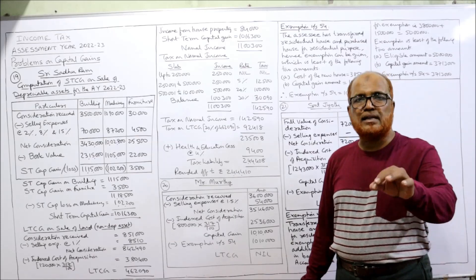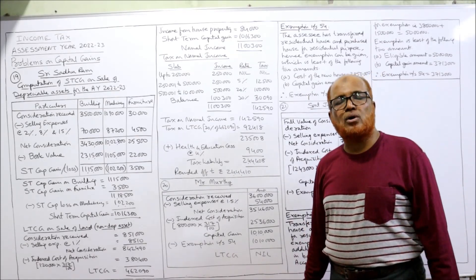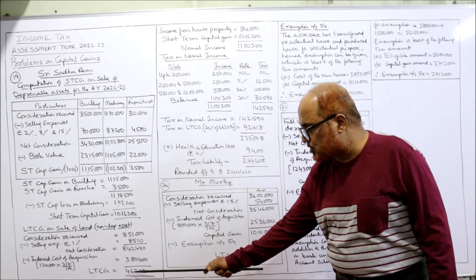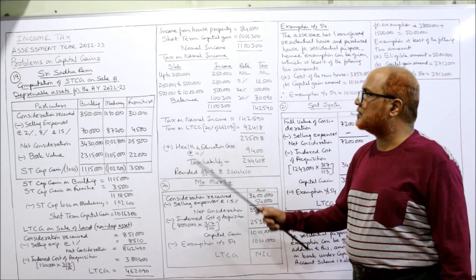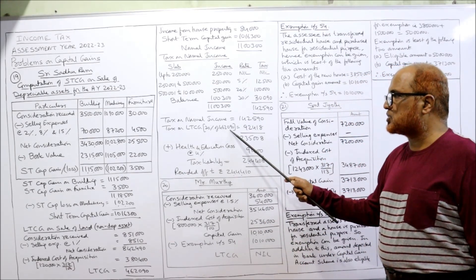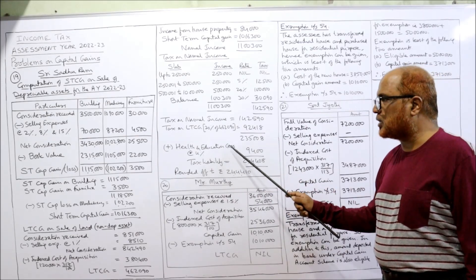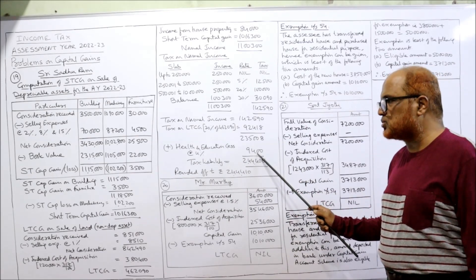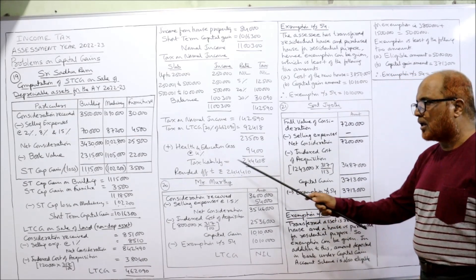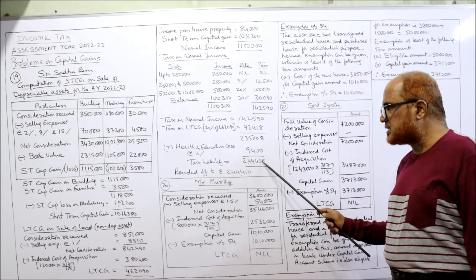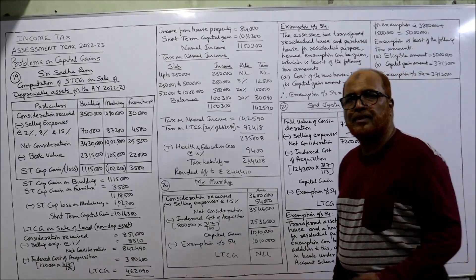Add tax on LTCG: ₹4,62,090 at flat 20% rate. Then add health and education cess at 4% = ₹9,400. Total tax liability comes to ₹2,44,008, rounded off to the nearest ₹10 = ₹2,44,010. This is the tax liability for Problem 19.